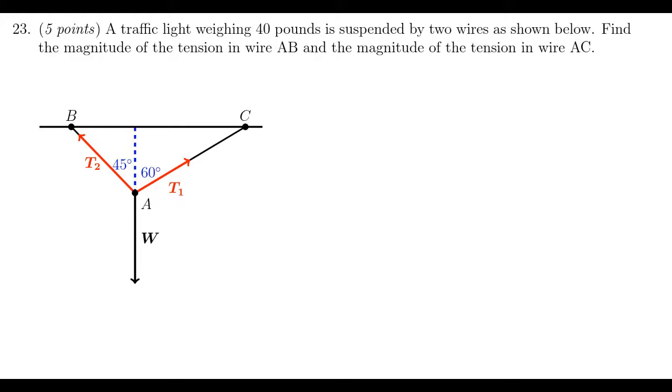In this video, we provide the solution to question number 23 from the practice final exam for math 1060, in which case we have a traffic light that weighs 40 pounds and is suspended in the air by two wires. The tension along the two wires, we'll call it T1 and T2. We want to find the magnitude of the tension in both of these wires here.